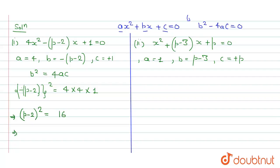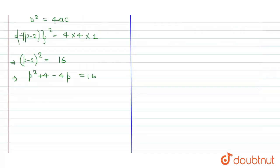Expanding using the formula (a minus b) squared equals a squared minus 2ab plus b squared: (p minus 2) squared gives p squared minus 4p plus 4. Setting this equal to 16, we get p squared minus 4p plus 4 minus 16 equals zero, which simplifies to p squared minus 4p minus 12 equals zero.